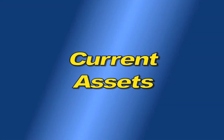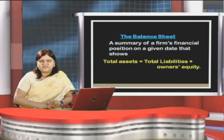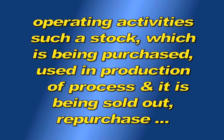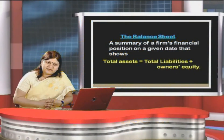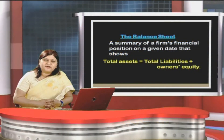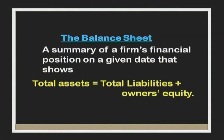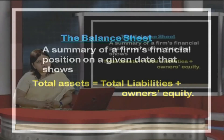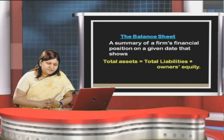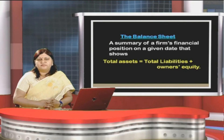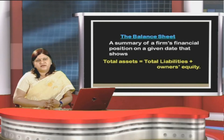Current assets are comprised of all those assets for a period of one year or less, primarily used in operating activities — such as stock purchased, used in production, sold, and repurchased — along with debtors, bills receivable, prepaid expenses, bank balances, and cash in hand. On the liability side, long-term and short-term obligations are shown along with owners' equity comprising equity share capital, preference share capital, and reserves and surplus. On the left side of the balance sheet, equity plus debts are shown, and on the right side, fixed assets and current assets are reflected.